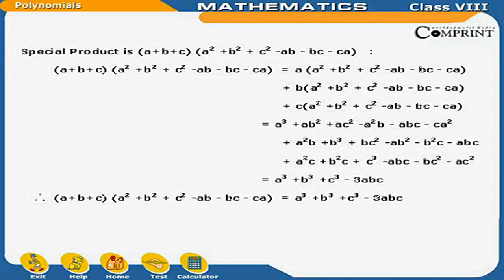Special product: (A+B+C)(A²+B²+C²−AB−BC−CA). Expanding by multiplying each of A, B, C through: = A³+AB²+AC²−A²B−ABC−CA² + A²B+B³+BC²−AB²−B²C−ABC + A²C+B²C+C³−ABC−BC²−AC² = A³+B³+C³−3ABC. Therefore: (A+B+C)(A²+B²+C²−AB−BC−CA) = A³+B³+C³−3ABC.